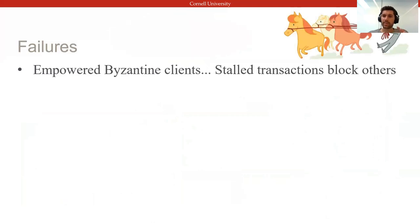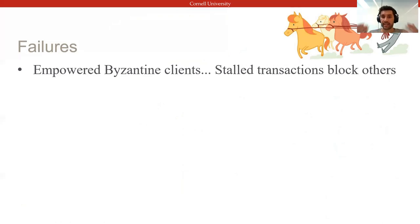What was swept under the rug in previous slides is that empowering clients in general also empowers Byzantine clients. If their transactions are commutative, this has no impact on other clients, but if they conflict, misbehaving clients can block contending transactions or force them to abort.